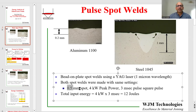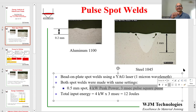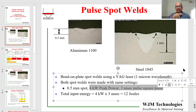The spot was produced by a YAG laser, which operates at 1 micron, and you will see the reasoning behind the importance of that wavelength in a few slides. The parameters were a 0.5 millimeter spot size, 4 kilowatts of peak power, and 3 milliseconds of a square pulse. When we turn the laser on, it goes up to 4 kilowatts, stays there for 3 milliseconds, and turns off.